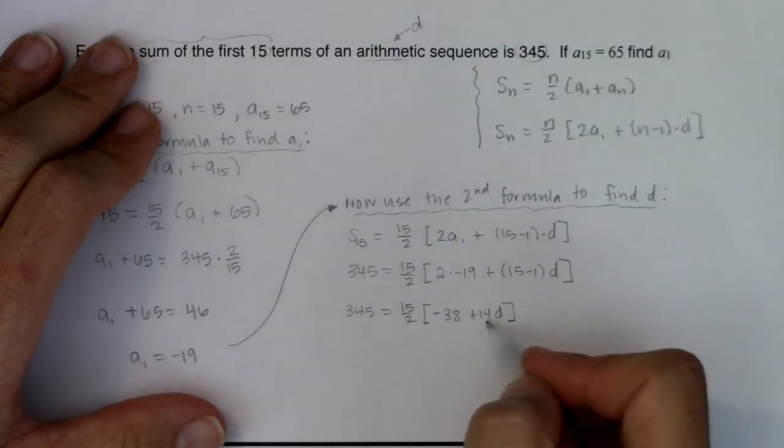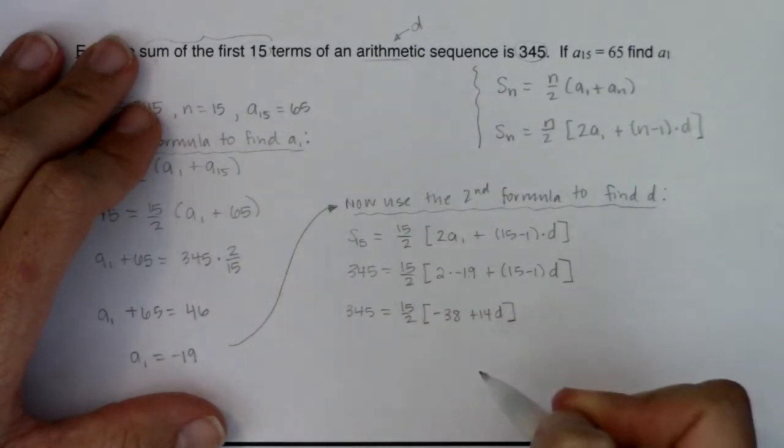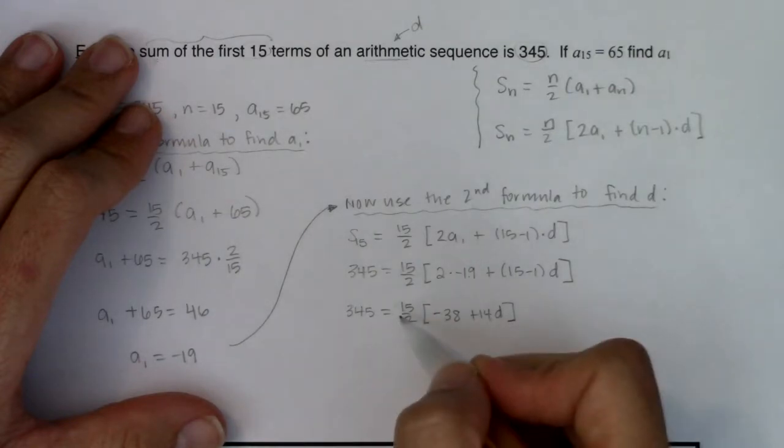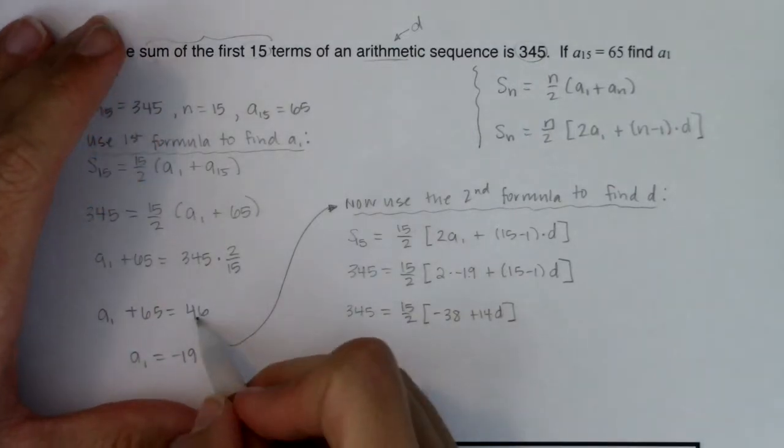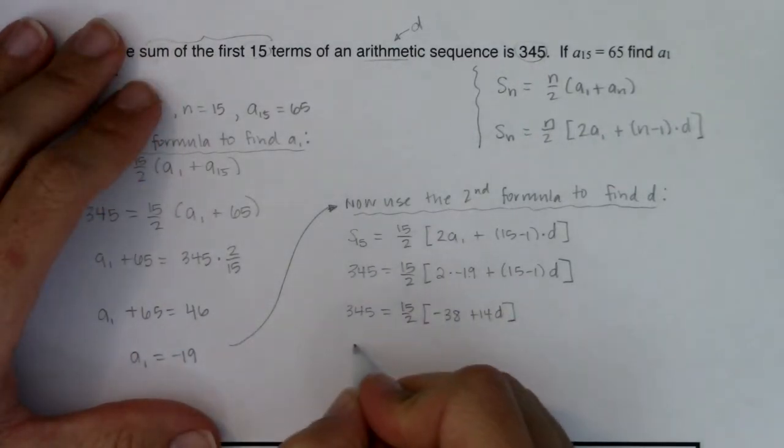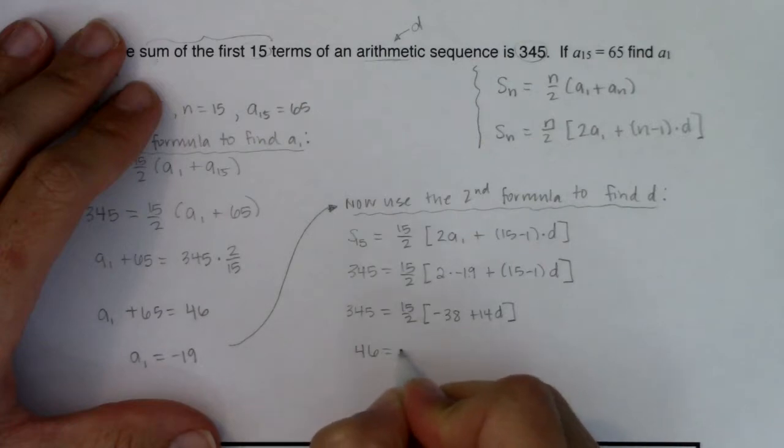Now you can distribute the 15 halves to both sides, the negative 38 and the 14 if you want. I'm still just going to multiply the 15, or divide both sides by 15 halves, which is like multiplying 345 by 2 fifteenths. And I'm going to do that because I happen to already know it's equal to 46. So I will get 46 here, equaling negative 38 plus 14d.